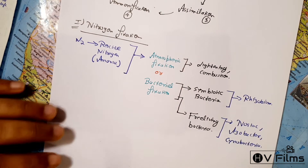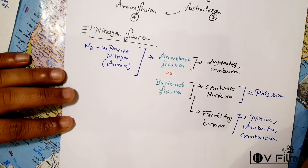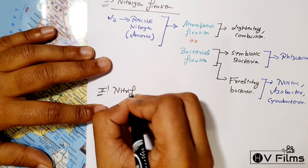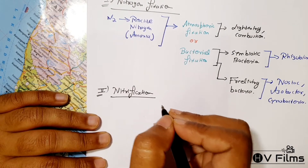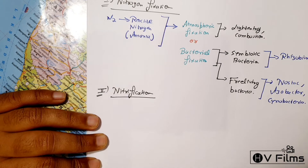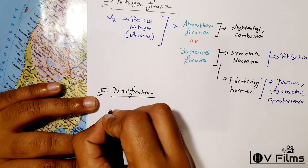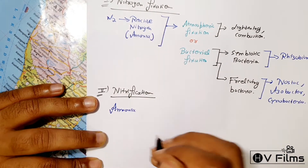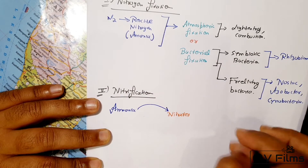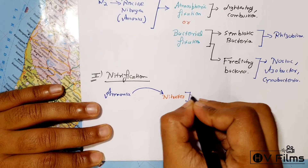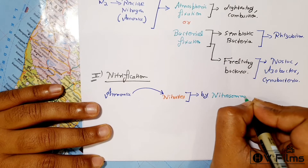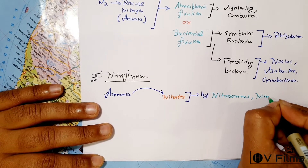That is what nitrogen fixation means — we are converting nitrogen to the simpler reactive nitrogen form. Now comes the second stage: nitrification. Nitrification is a process in which ammonia is converted into nitrates through the bacteria nitrosomonas and nitrococcus.